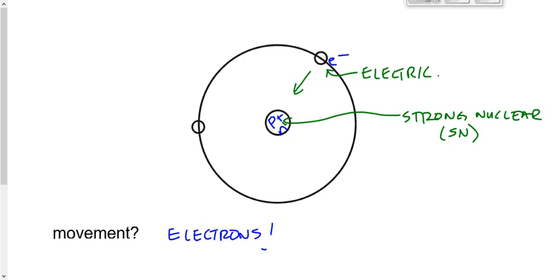That's not to say the strong nuclear force can't ever lose — protons can leave or split from an atom. But that's not an electrical interaction; that's a nuclear reaction. That's a whole different ballgame. That doesn't happen by rubbing a balloon against your hair. You don't get a nuclear explosion when you rub your comb through your hair or rub a balloon against your hair.